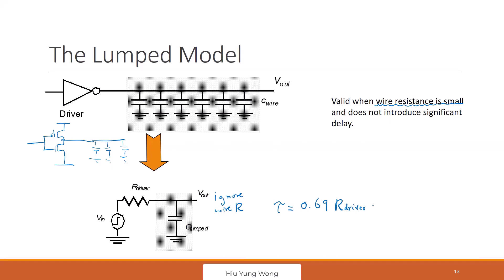Yes, correct. Because of the definition — we only want to drive from VDD to VDD over two, so you get ln(2), which is 0.69. This is the lump model. But what is R_drive? I hope you know what we are talking about.